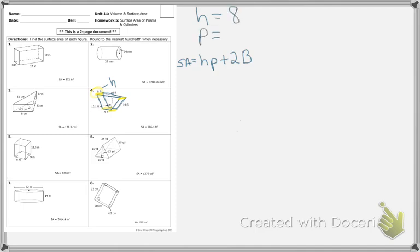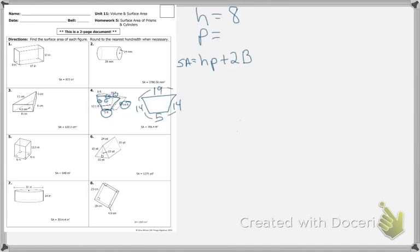The perimeter is going to be the distance around that trapezoid. This right here is congruent to this one, which is congruent to this one, so we have 14 and 14. This piece right here is 19 and 19. So we have all of our sides of the trapezoid. If I add that up, that's 28 plus 5 plus 19, giving us 52.